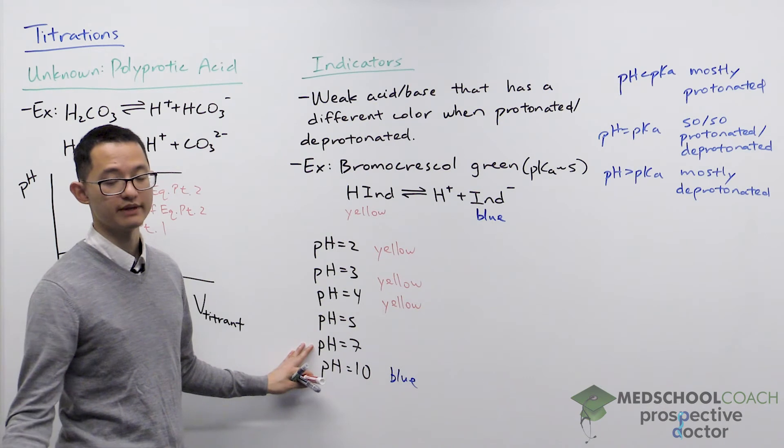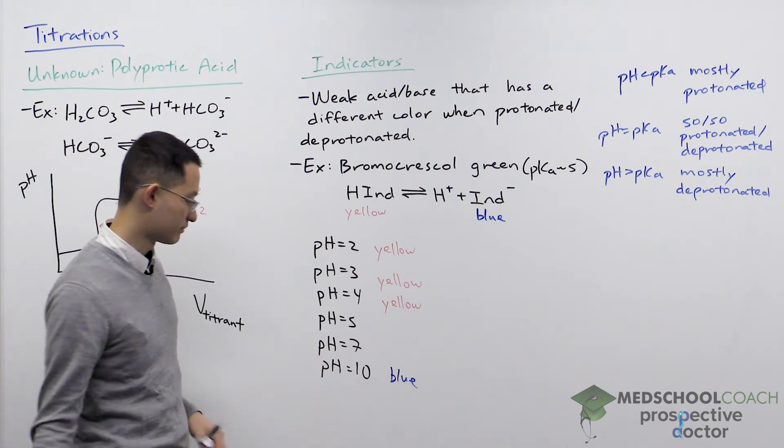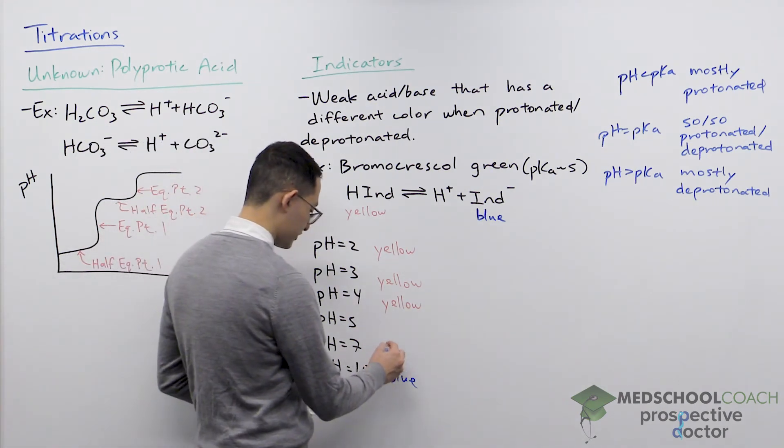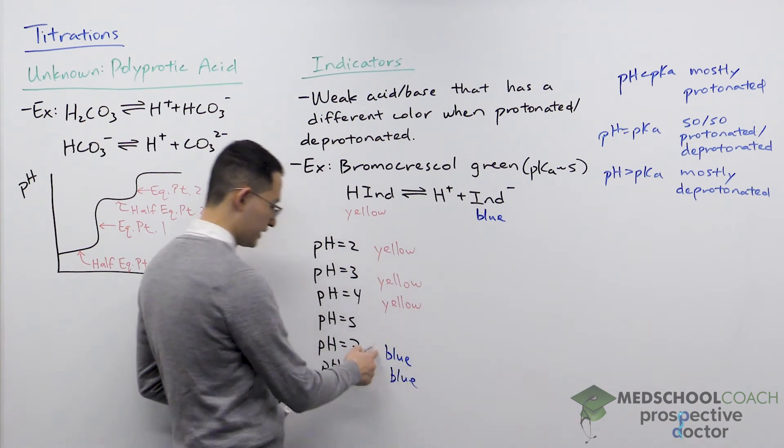Similarly, at a pH of 7, this pH is still greater than the pKa, so our molecule is still mostly deprotonated and blue.